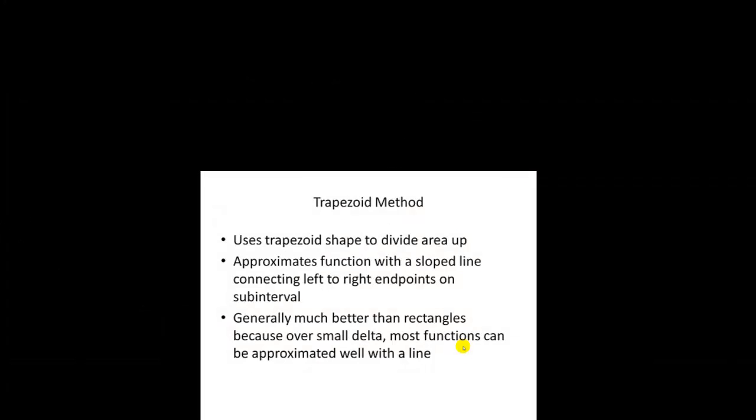Let's look at the trapezoid method, also known as the trapezoid rule. It is going to use a trapezoidal shape to divide the area up into sub-intervals. Instead of approximating the function with a horizontal line like a rectangle, this is going to approximate the function with a sloped line. Over a reasonably small interval, that's going to work out pretty well, because a sloped line is a good way to approximate functions, as we saw in linearization over small delta x's.